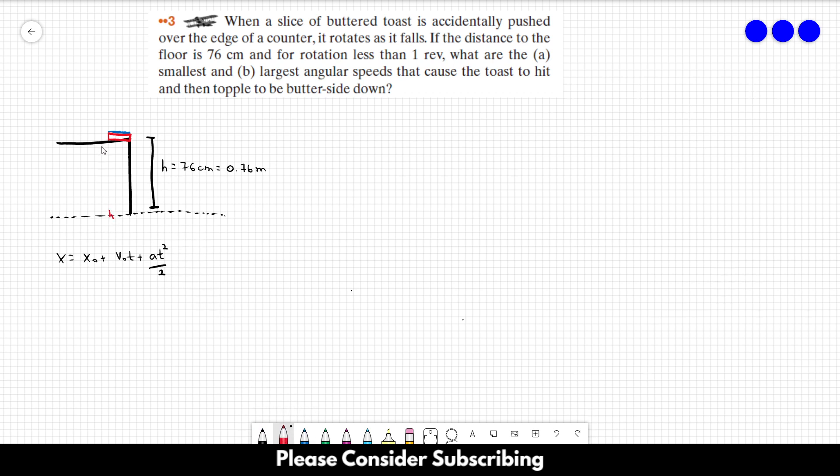The initial speed is zero as well, so this goes away. The final position is h, the acceleration is acceleration of gravity. So this is two times h over g, and the square root of everything.